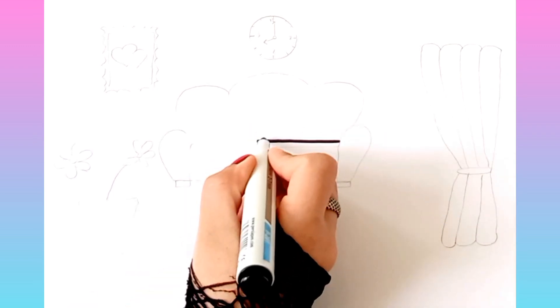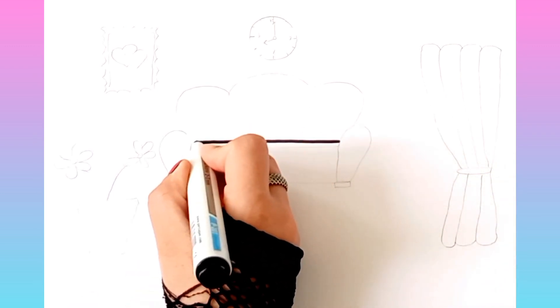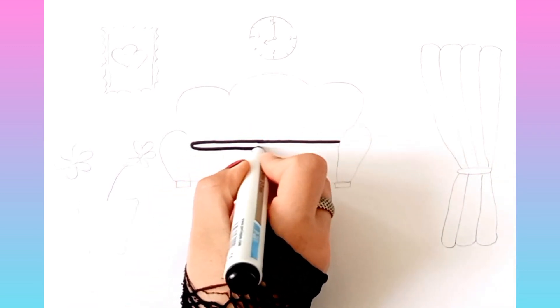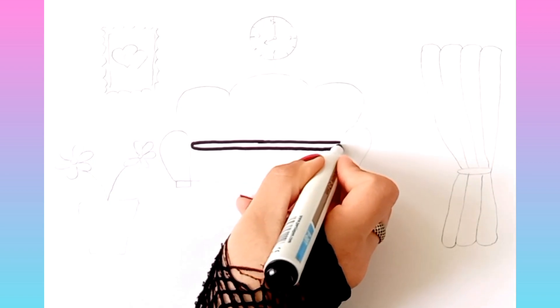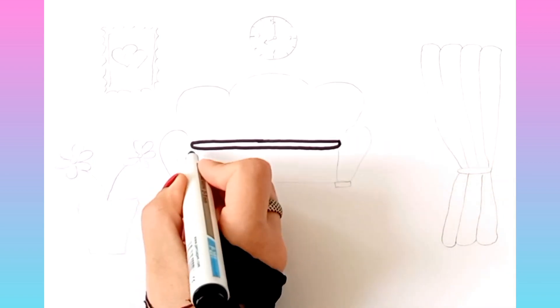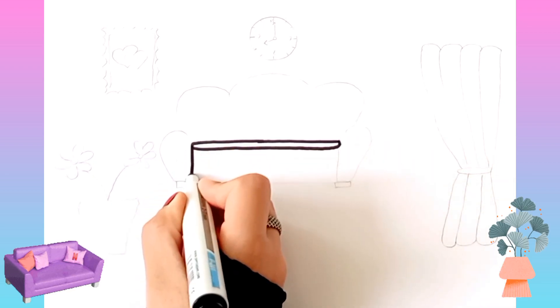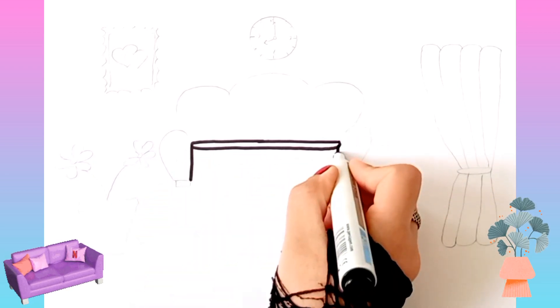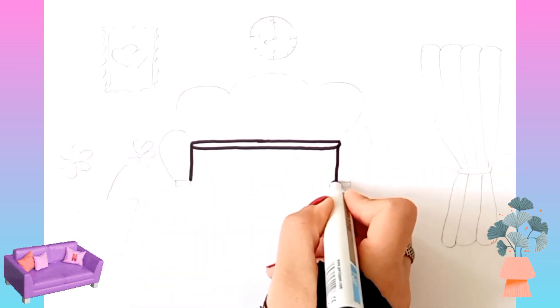Let's get started. A is for apple, a, a, apple. B is for ball, b, b, ball.